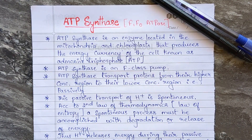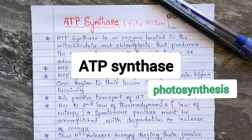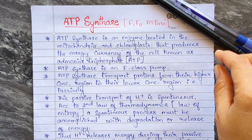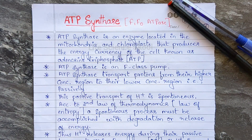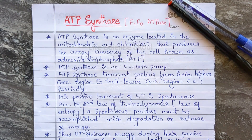Welcome back to the YouTube channel. This video is about ATP synthase. In the previous video we discussed photosynthesis, molecular configuration, and supramolecular organization of molecular complexes. ATP synthase is an enzyme — anything ending in '-ase' is an enzyme. It is also called complex five, the fifth complex in the electron transport system alongside photosystem one, cytochrome b6f, and photosystem two.